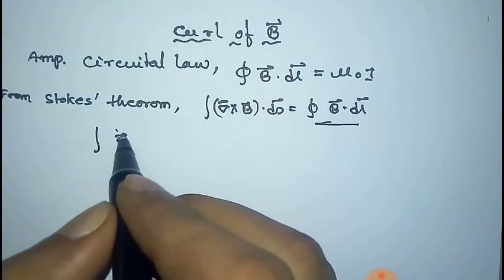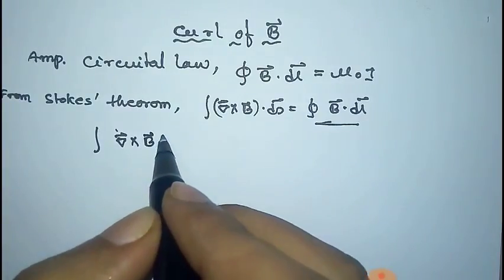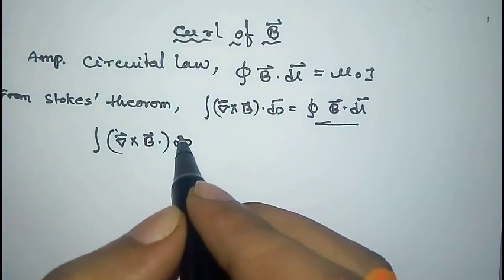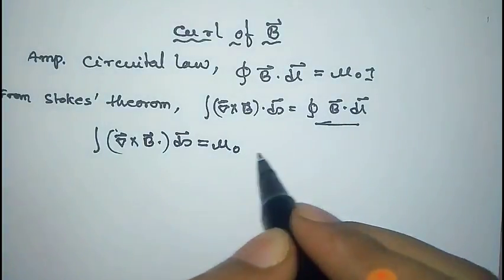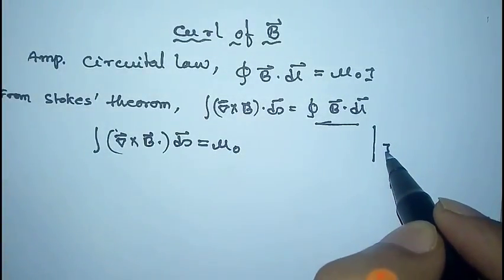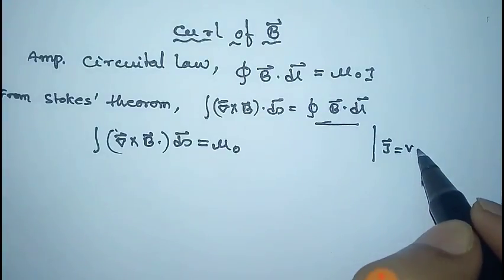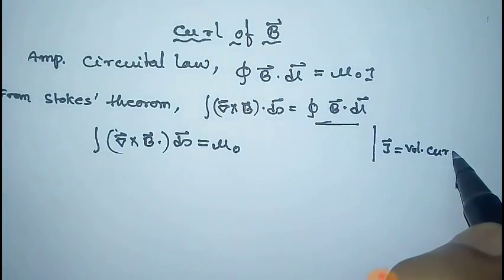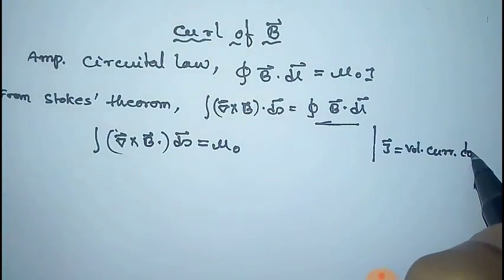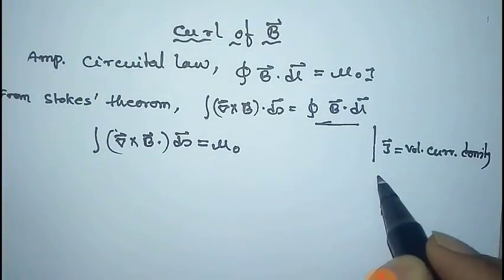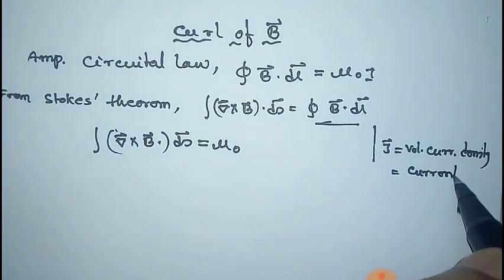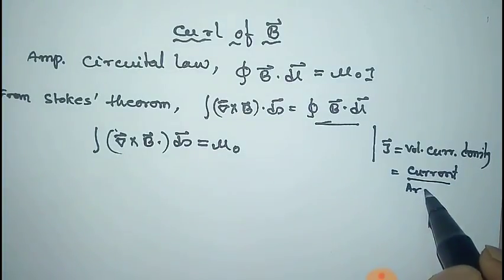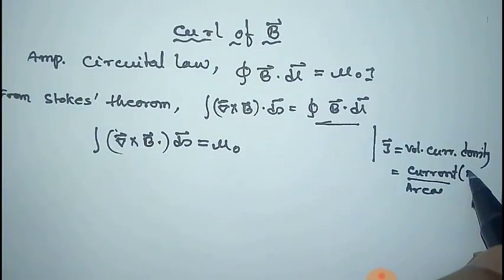So it will be ∮(∇×B)·ds = μ₀I. Now see that j vector is the volume current density, which equals current per area, I/S.